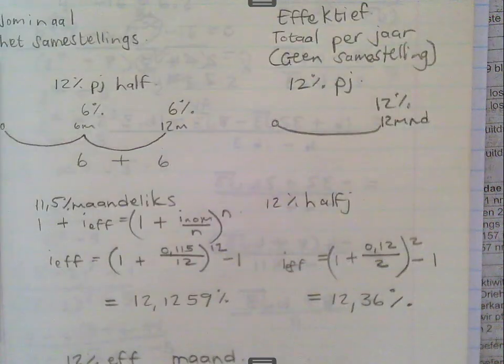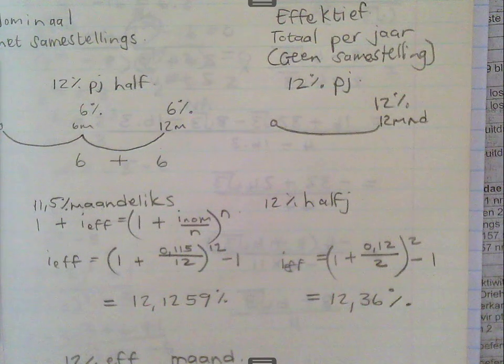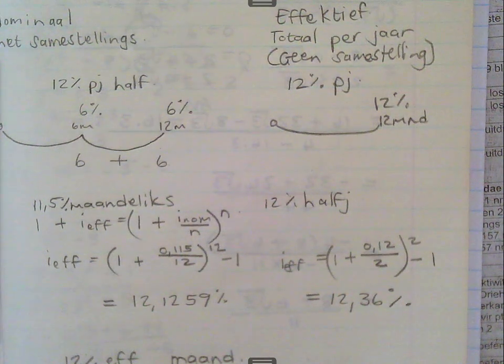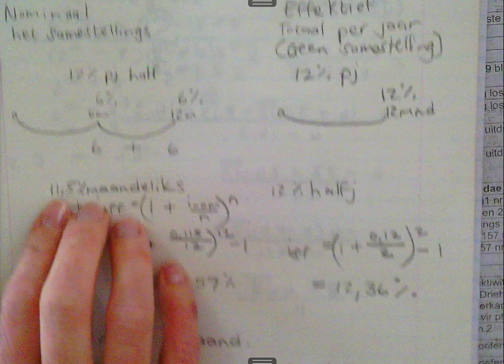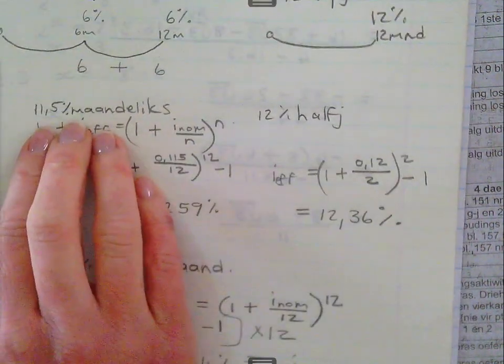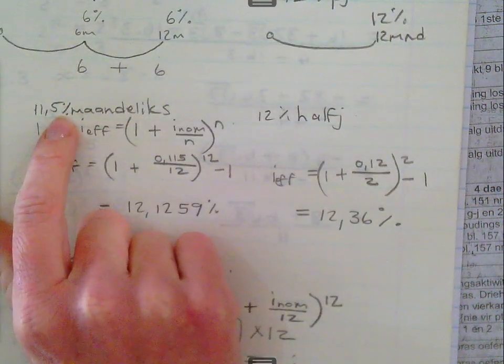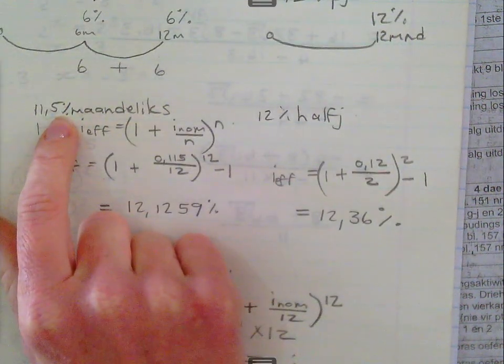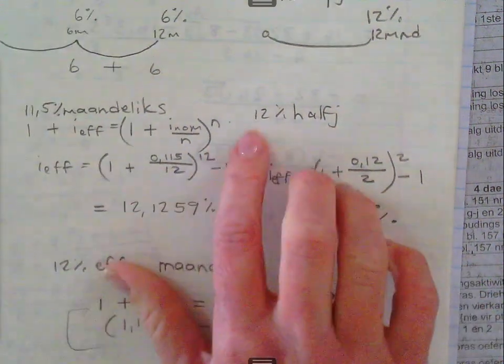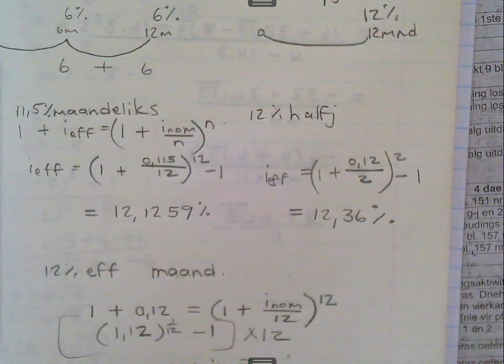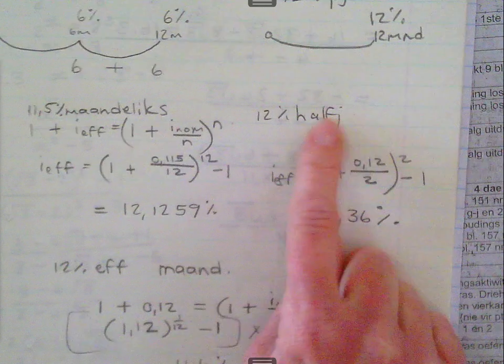Does that make sense? Okay. So, effectively, you are earning more than 12%, right? That's why we have this formula, to do the calculation, to calculate how much interest rate will you actually receive if you receive 12% compounded annually, right? So, I did an example here. I said, if you go to Bank A, and they tell you that they can give you an interest rate of 11.5% compounded monthly, and the Bank B says that you will, you can receive an interest rate of 12% compounded semi-annually.